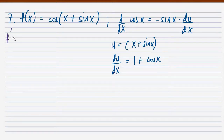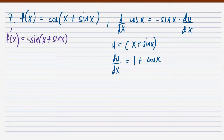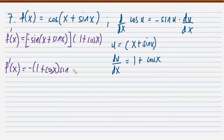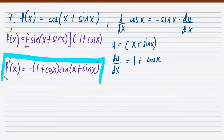Applying that to our problem, f prime of x is equal to negative sine of (x plus sine x), multiplied by the derivative of x plus sine x, which is 1 plus cosine x. So f prime x is equal to negative sine of (x plus sine x) times (1 plus cosine x). That's the final answer.